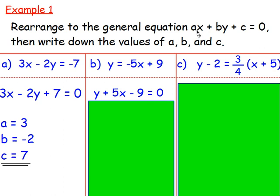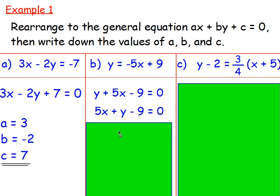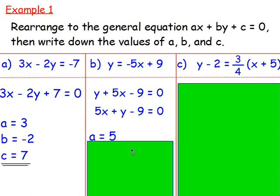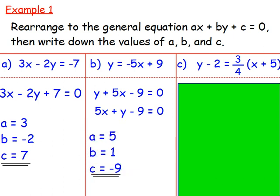After that, it's asking us for ax plus by plus c equals 0 — so something x, something y plus a number equals 0. Leaving it with x and y the other way around is absolutely fine, but if you want to write it with x first, then y, then the number equals 0, just put the 5x first, then plus y, then minus 9. From there, a is 5, b is 1, and c is negative 9.